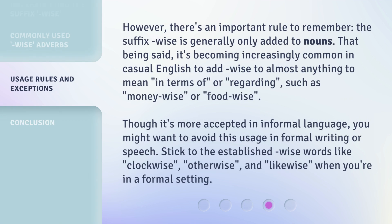However, there's an important rule to remember. The suffix '-wise' is generally only added to nouns. That being said, it's becoming increasingly common in casual English to add '-wise' to almost anything to mean 'in terms of' or 'regarding', such as 'money-wise' or 'food-wise'. Though it's more accepted in informal language, you might want to avoid this usage in formal writing or speech. Stick to the established '-wise' words like 'clockwise', 'otherwise', and 'likewise' when you're in a formal setting.